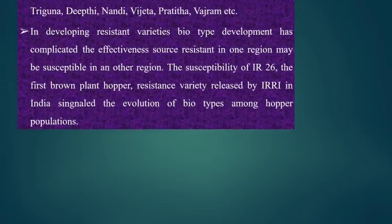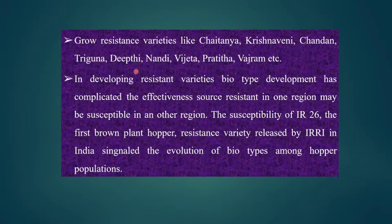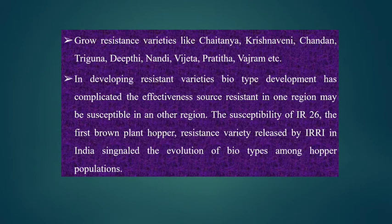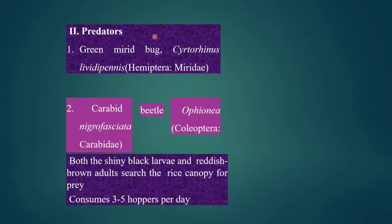Resistant varieties developed include Chaitanya, Krishnaveni, Chandan, Triguna, Deepti, Nandhi, Vijayata, Pratita, and Vajram. These are being developed to address biotype development, and research in plant breeding for resistance continues to improve crop profitability and health.